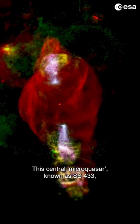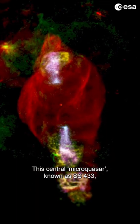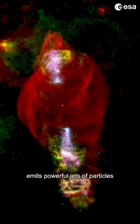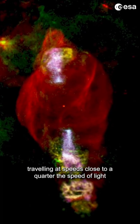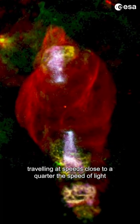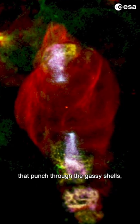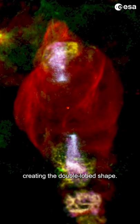This central micro quasar, known as SS433, emits powerful jets of particles traveling at speeds close to a quarter the speed of light, that punch through the gassy shells, creating the double-lobed shape.